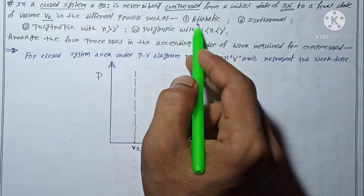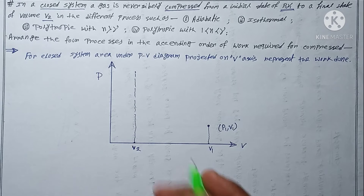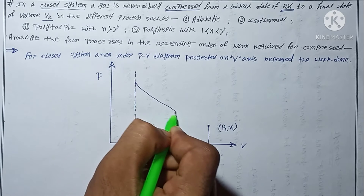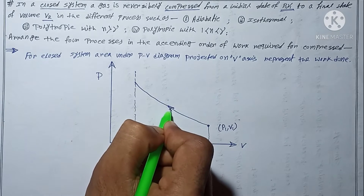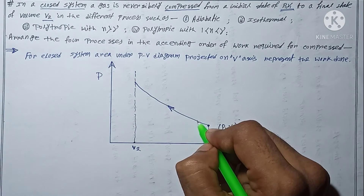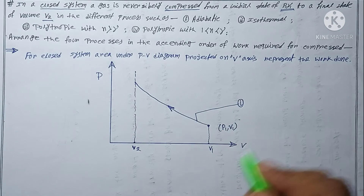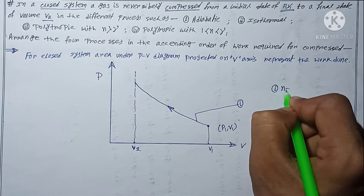The first process is the adiabatic process. For an adiabatic process the value of n is gamma. I represent it on the diagram — since this is compression, the arrow is directed toward v2. This curve is process number one.